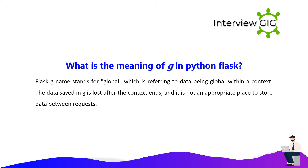What is the meaning of G in Python Flask? Flask G stands for global, referring to data being global within a context. The data saved in G is lost after the context ends, and it is not an appropriate place to store data between requests.